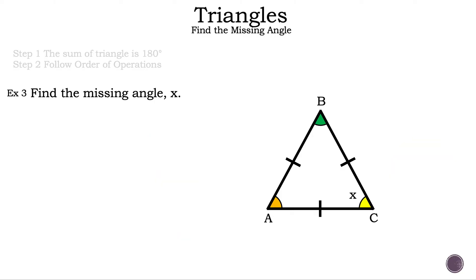Let's move on to example three. Let's read the question: find the missing angle X. Let's take a look at the triangle that they gave us. They didn't give us any measurements. So can we find the missing angle? Remember, we need to know two angles in a triangle to find the third. And in this case, yes we can, because this triangle is an equilateral triangle. The hash marks indicate each line has the same measurement, which means all the angles are the same. Some of you may already know what that is, but we're going to continue just as a refresher.